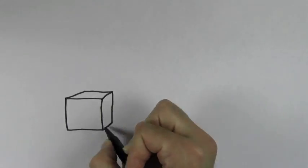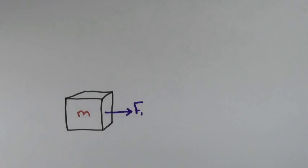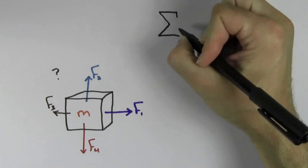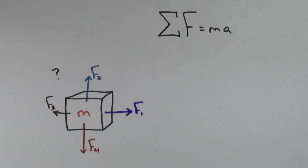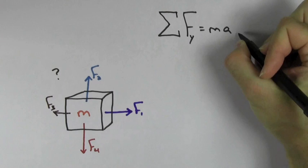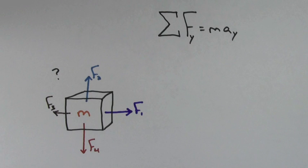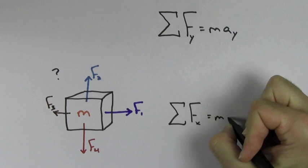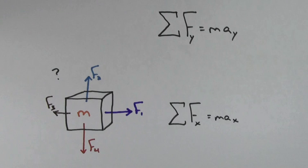What if a mass has forces exerted on it in the vertical direction and the horizontal direction at the same time? Well, you still use the equation sum of the forces equals MA, but you analyze both directions separately. In other words, set all the forces in the Y direction equal to mass times acceleration in the Y direction, or set all the forces in the X direction equal to mass times acceleration in the X direction.